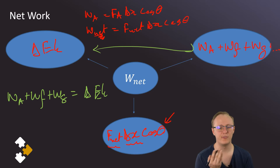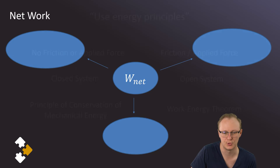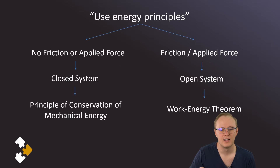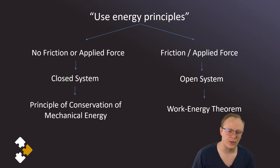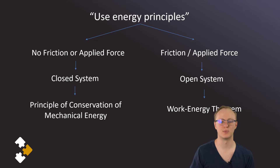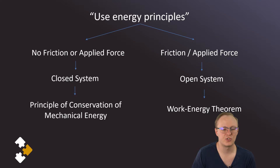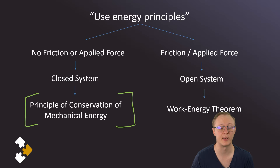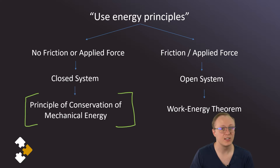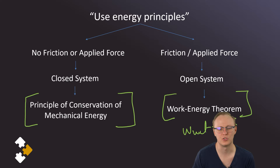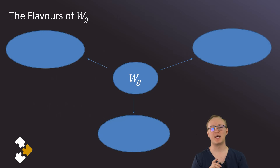Choosing the right approach depends on the information you have. When a question says 'use energy principles' and there's no friction or applied force — a closed system — use the principle of conservation of mechanical energy. If there is friction or an applied force, it's an open system, and that's when you use the work-energy theorem: W_net = ΔEk.